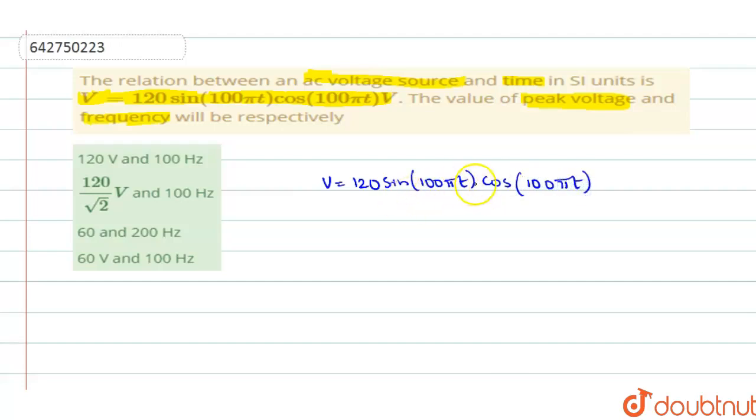When you have to keep it in the form of a general equation, you can write this equation as sine of 100πT into cos of 100πT. You can write this in the form of sine 2θ equals 2 sine θ into cos θ. Here, θ is 100πT.